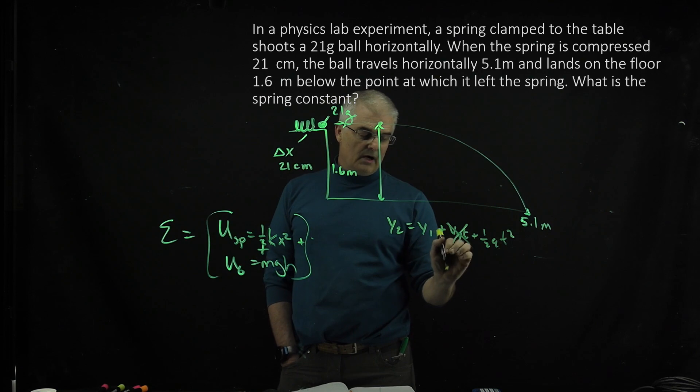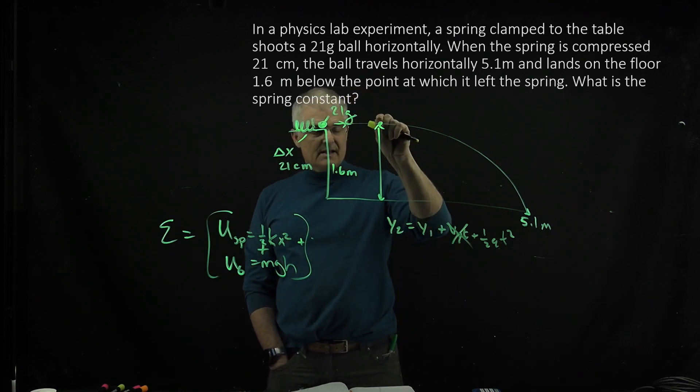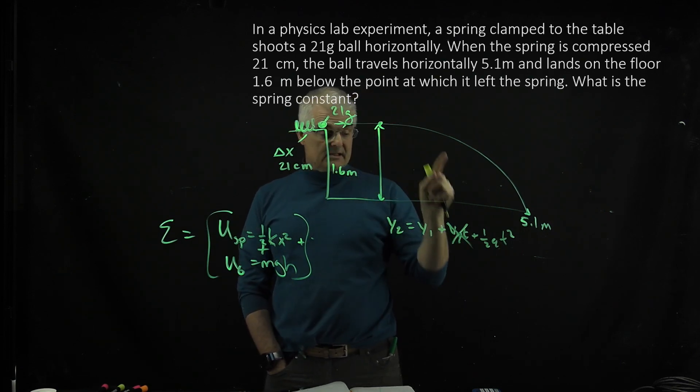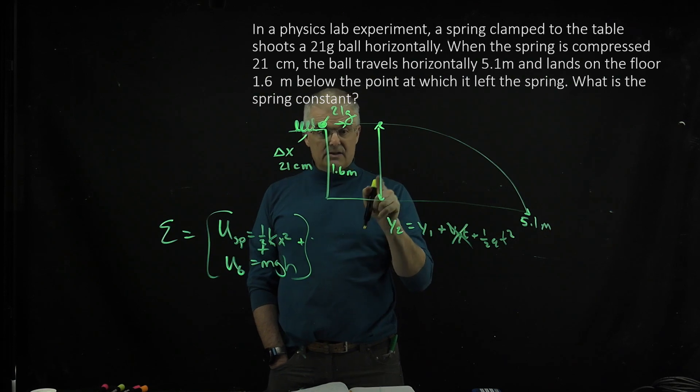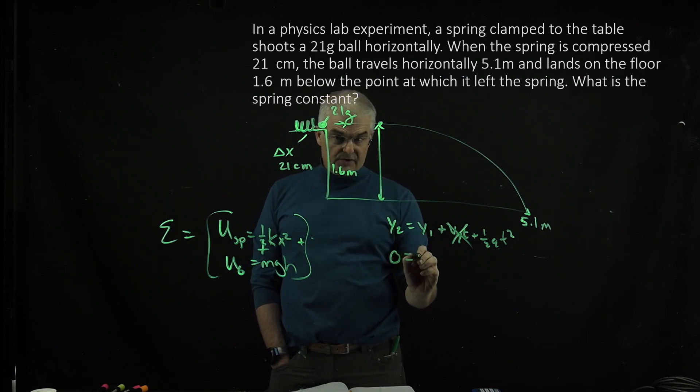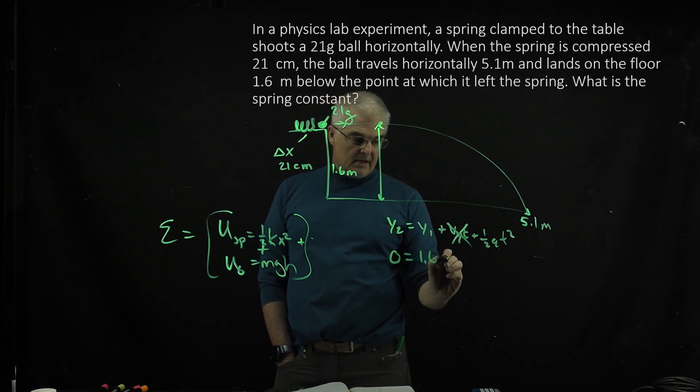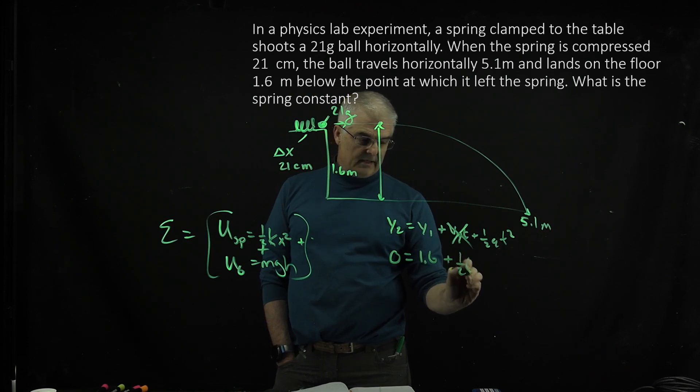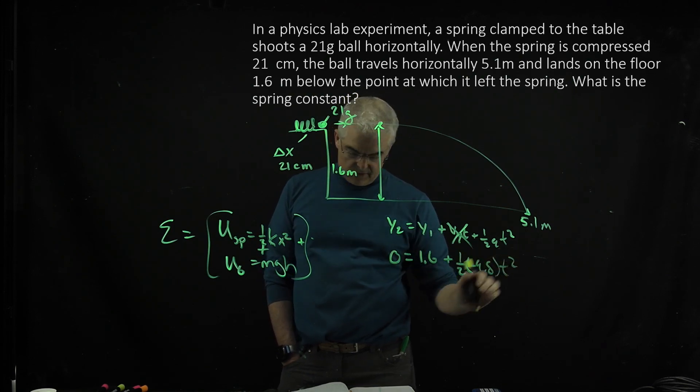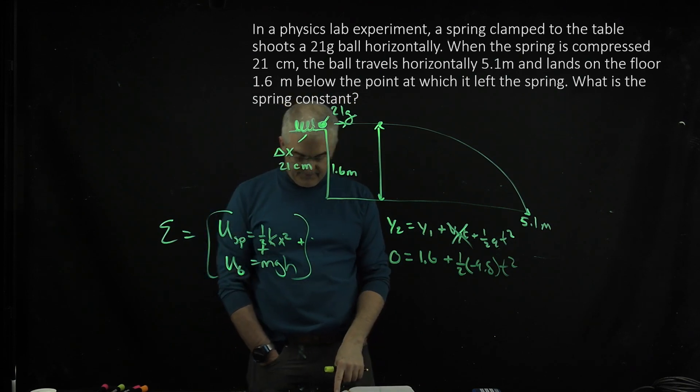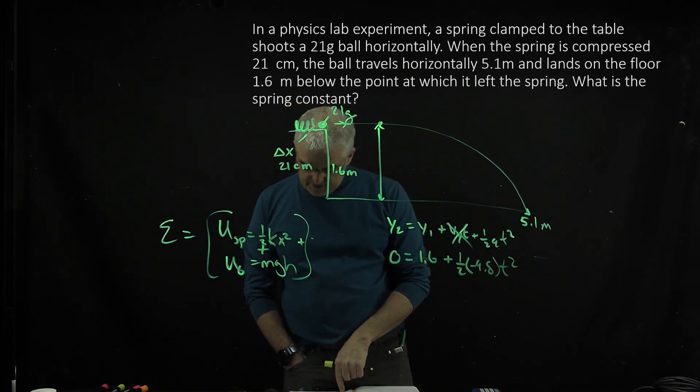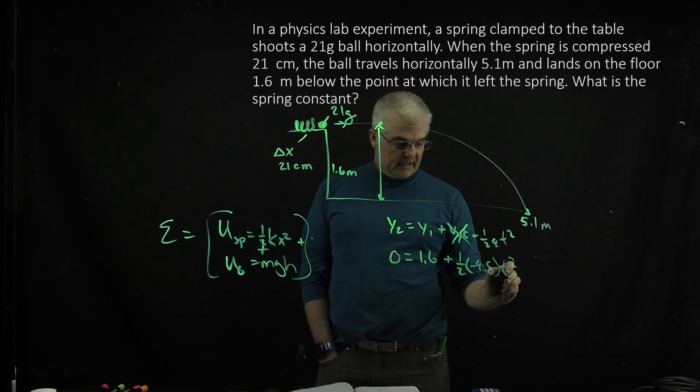I want to find the time. So I can say y₂ = y₁ + vᵧt + 1/2 at². Now, the vᵧ is 0 because it doesn't have any y velocity. It's going to have x velocity, and so y₂ is 0 = 1.6 + 1/2 × (-9.8) × t². So find the time first, and once you've found the time,